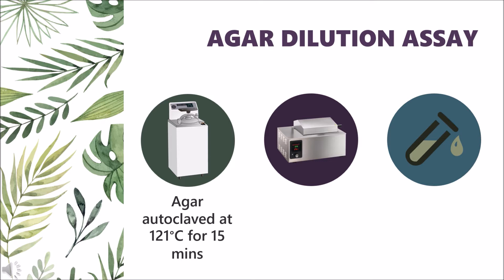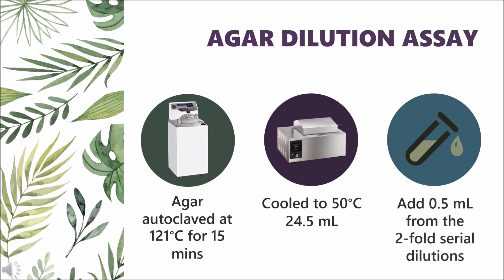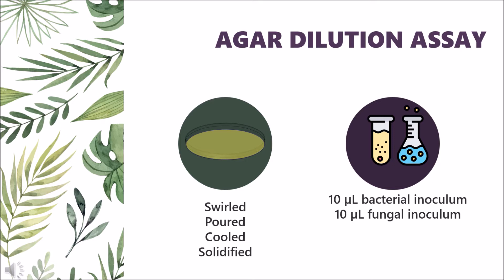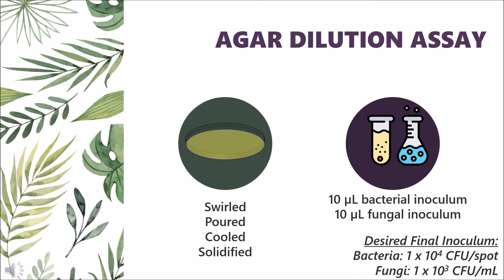This is a critical step: higher temperatures might inactivate the antibiotic, whereas at lower temperatures the agar will begin forming solid clumps, making it difficult to pour into homogeneous plates. The agars were then allowed to cool to 50 degrees Celsius in a water bath. About 0.5 ml from the two-fold serial dilutions of the extracts was added to 24.5 ml of the molten agar in the water bath. They were swirled, poured onto petri dishes, cooled, and solidified. 10 µl each from both the prepared bacterial and fungal inoculum was delivered on the solidified agar surface to give the desired final inoculum concentration of 10,000 CFU per spot and 1,000 CFU per ml, respectively. It is recommended to inoculate the antibiotic-containing agar plates starting with the lowest concentration.